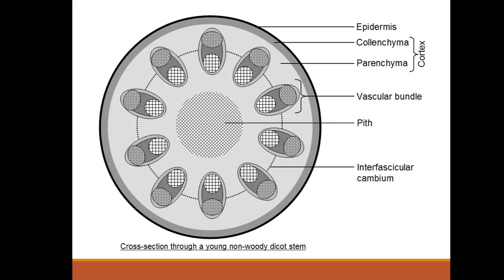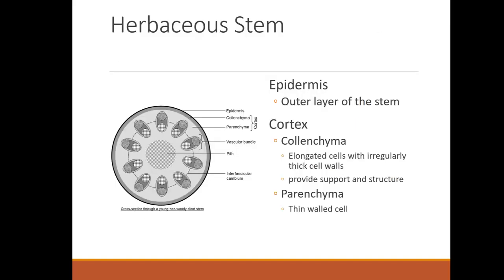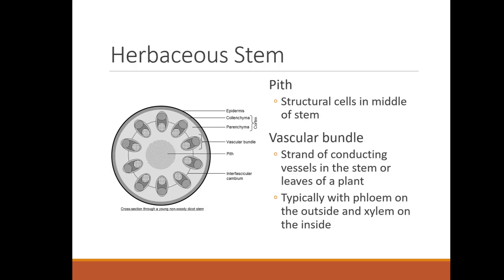Here are the structures within a non-woody dicot stem. There's the epidermis and the cortex, as well as the vascular bundle. The epidermis is the outer layer of the stem — leaves will also have an epidermis. The cortex is made of collenchyma, which are elongated cells with thick cell walls that provide support and structure, and parenchyma, which are thin-walled cells. The pith are structural cells in the middle of the stem, and in some cases this is more prominent than others, depending on the plant.